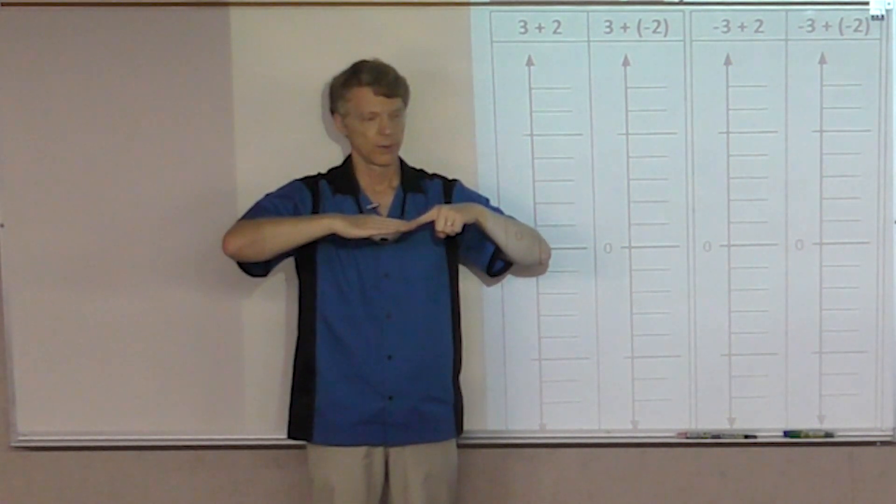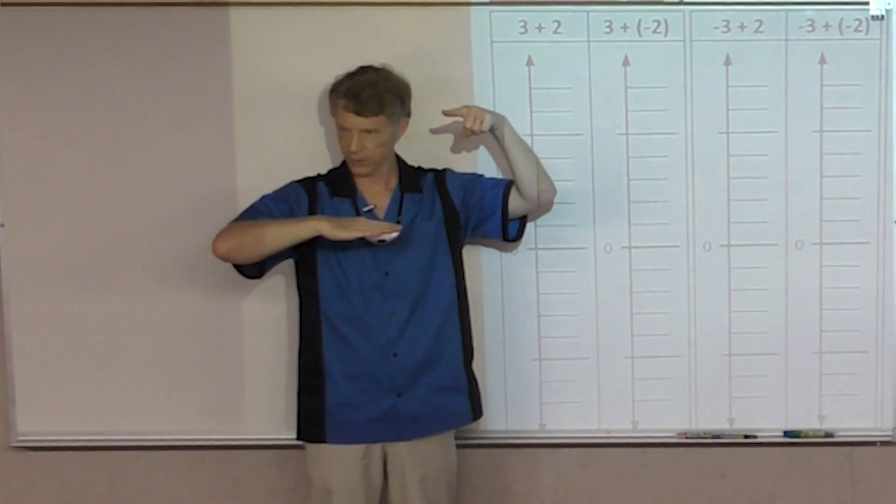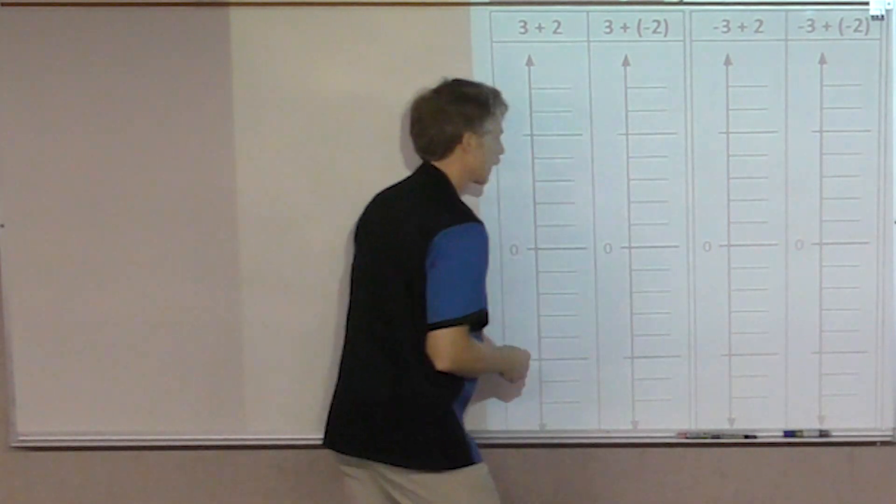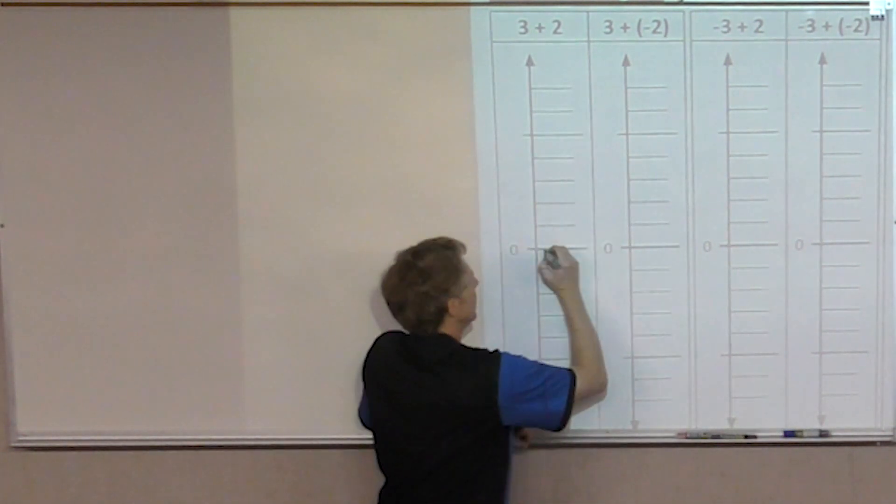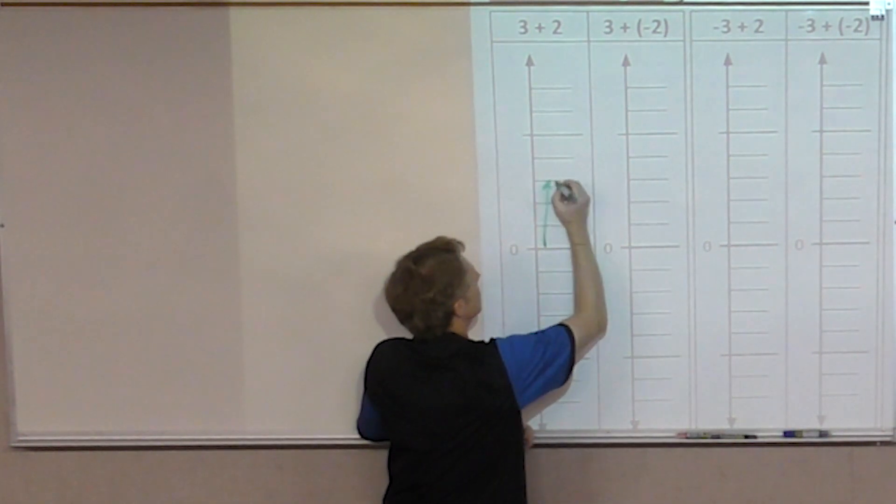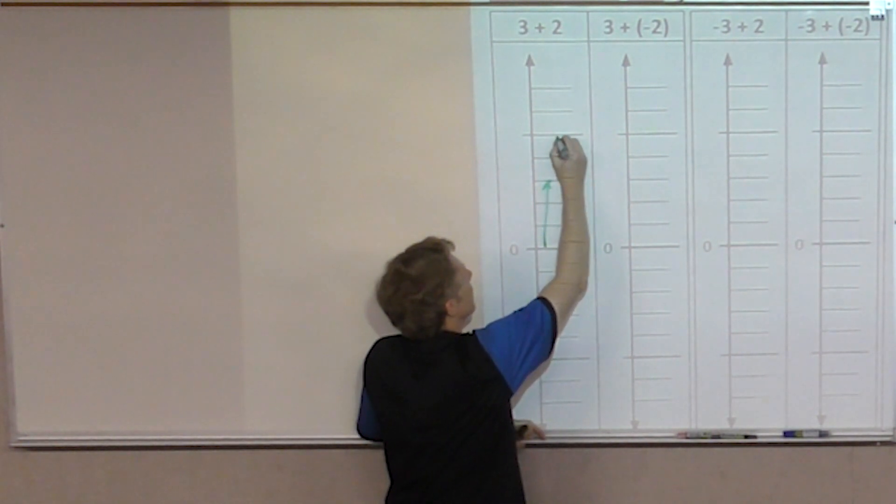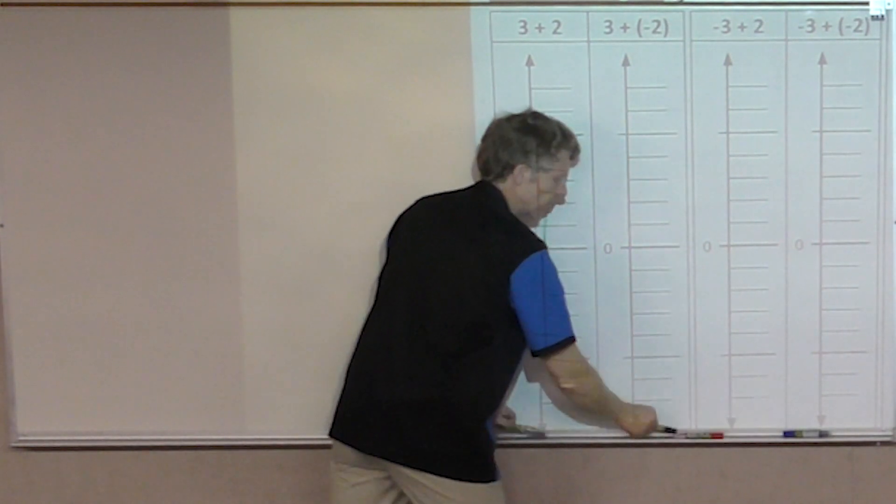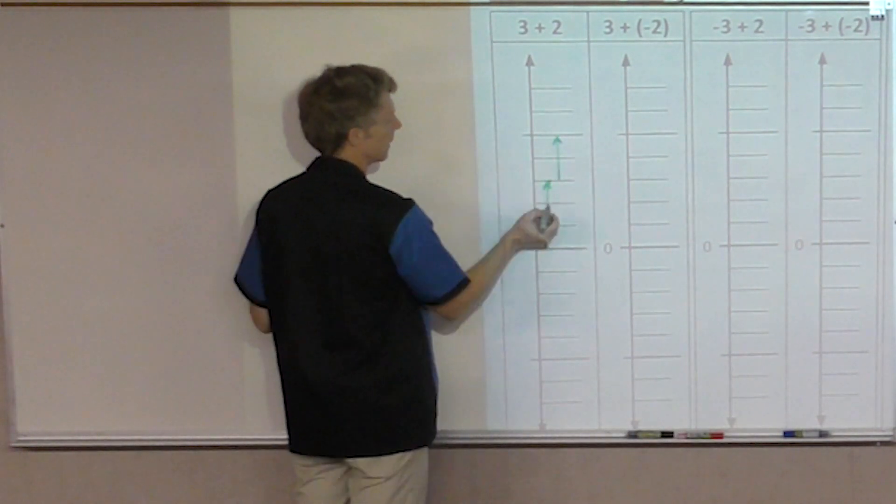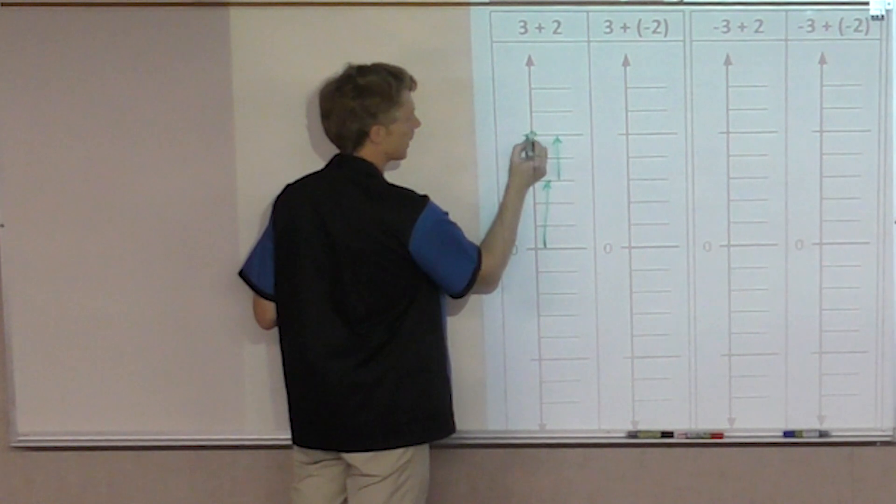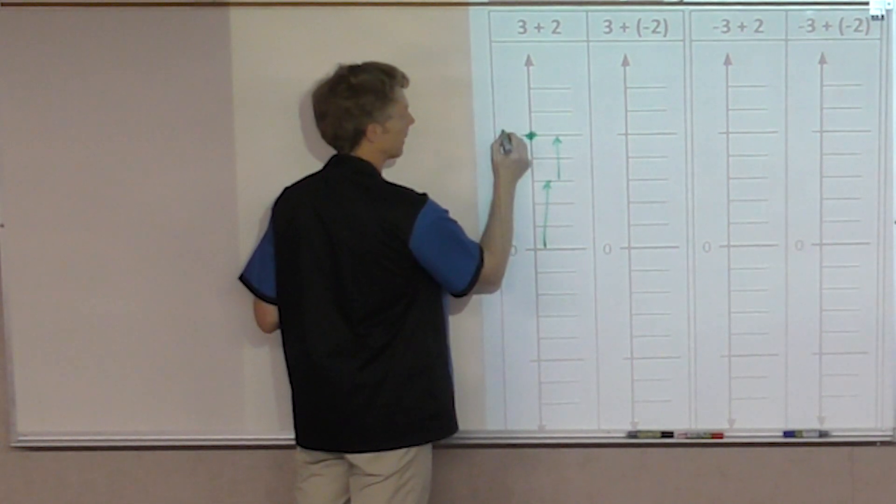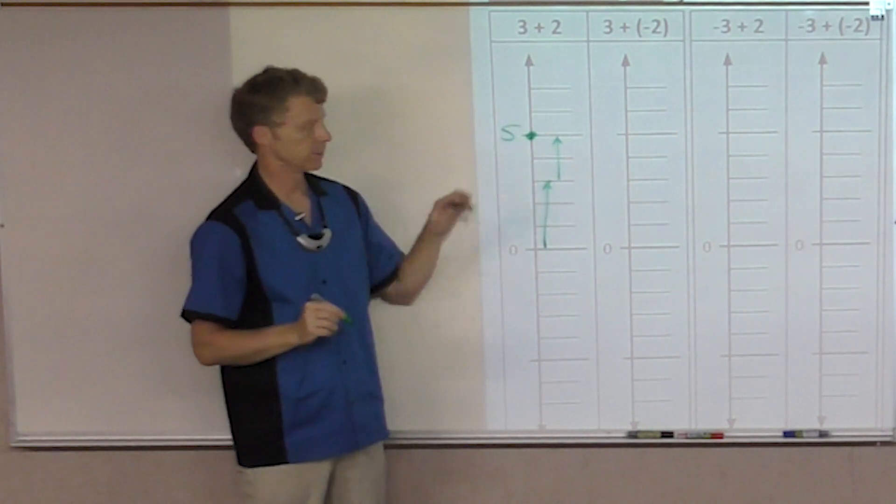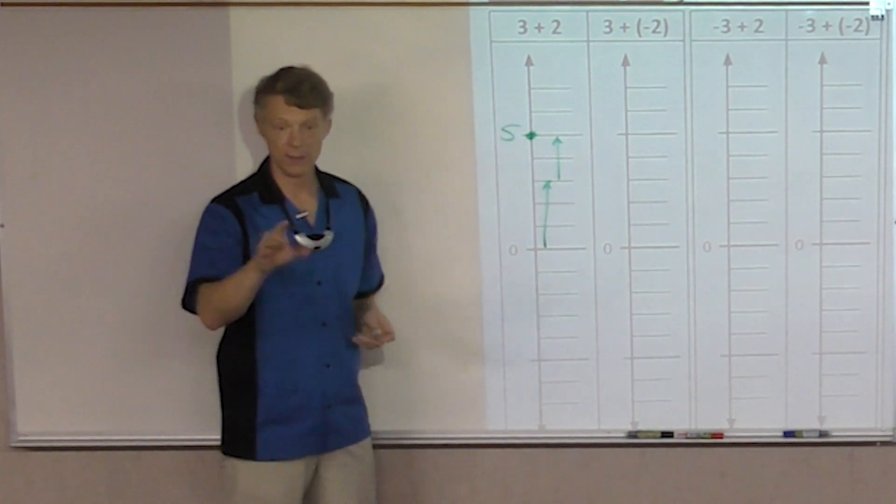So, three plus two. So far so good? Alright. Now what we're going to do to show it up here is we will say three plus two. Three plus two. But we still need to show where we ended up on the number line. And so here it is, right here. We ended up at the number five. Three plus two equals five. So go ahead and mark that on your sheet please.